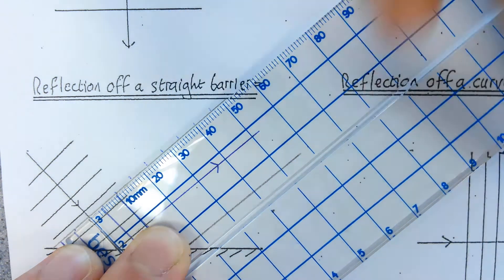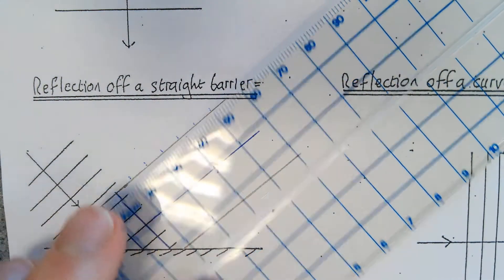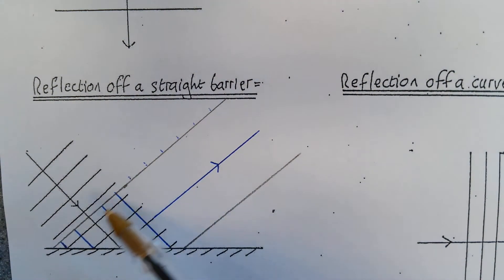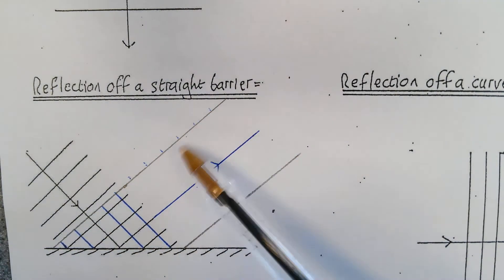Now I should have done that in pencil. I'll tell you why now: when I rub out these construction lines, those marks will still be there. So when you do this, do that in pencil please.